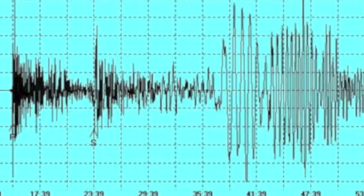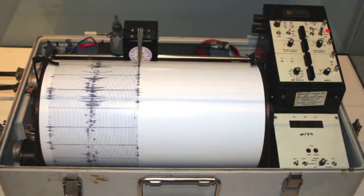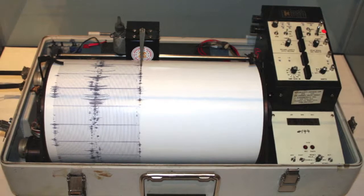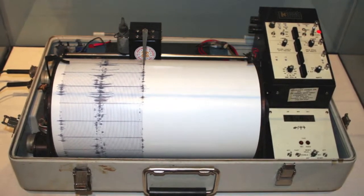P waves and S waves' arrival times can be used to estimate the distance a seismograph is away from the center of an earthquake, or the epicenter. Seismologists use the data they get from seismographs to see how far apart the P waves and S waves are.